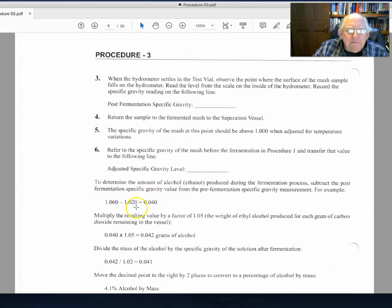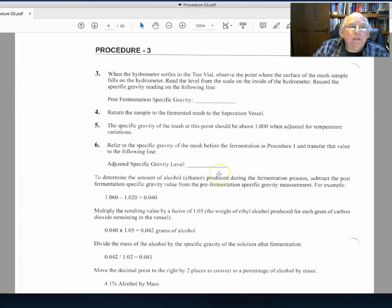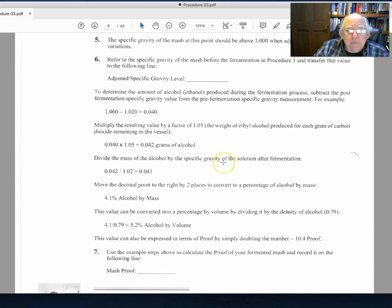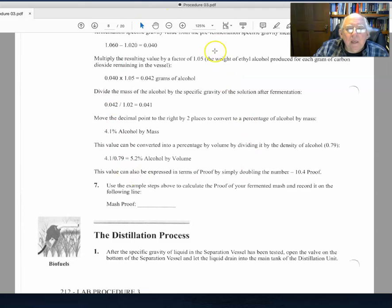Then we could use the difference in the specific gravity to determine the percentage or the percent by alcohol that has been obtained during the fermentation process. If we had our original data and then our data at this particular point, we could then figure out the proof associated with what we currently have.